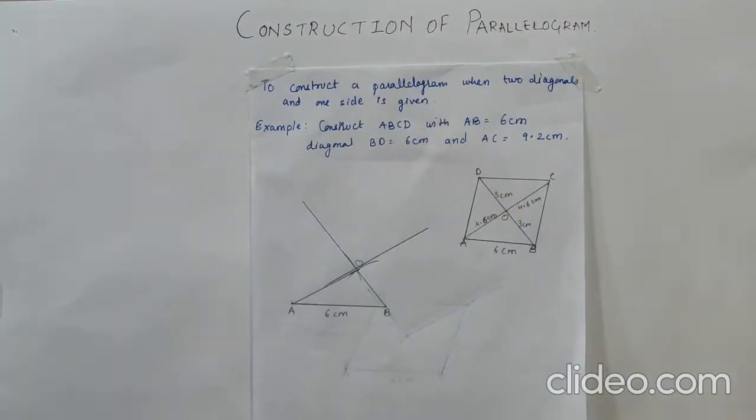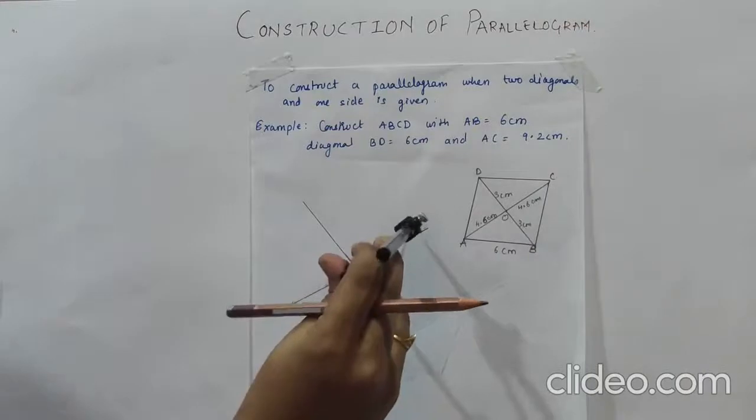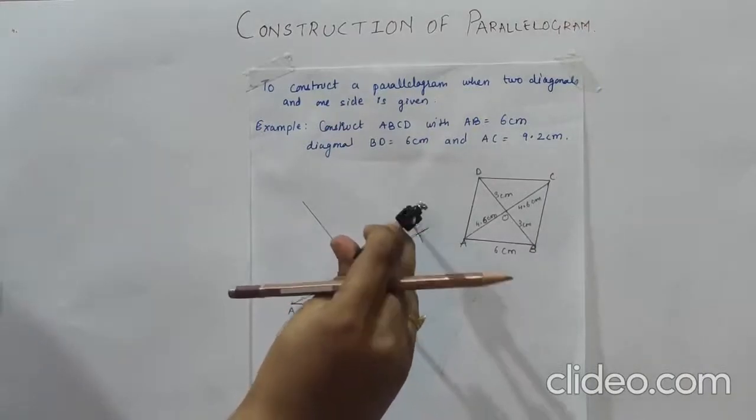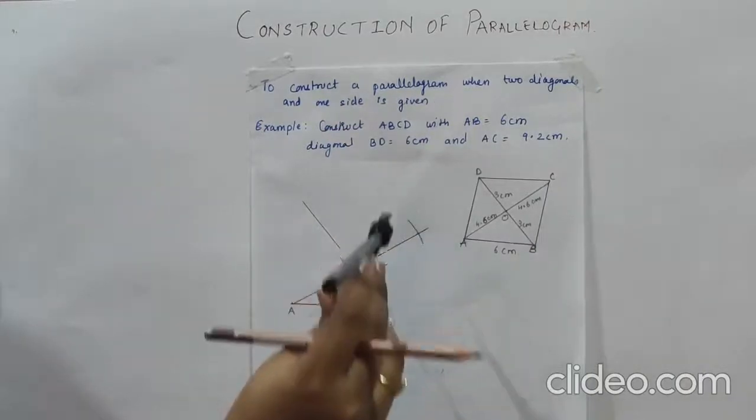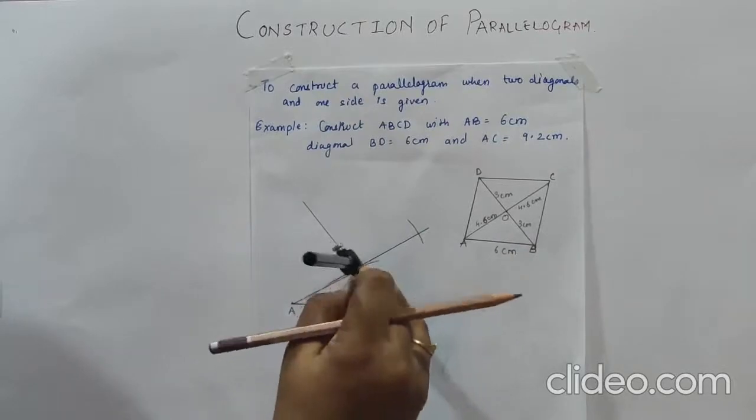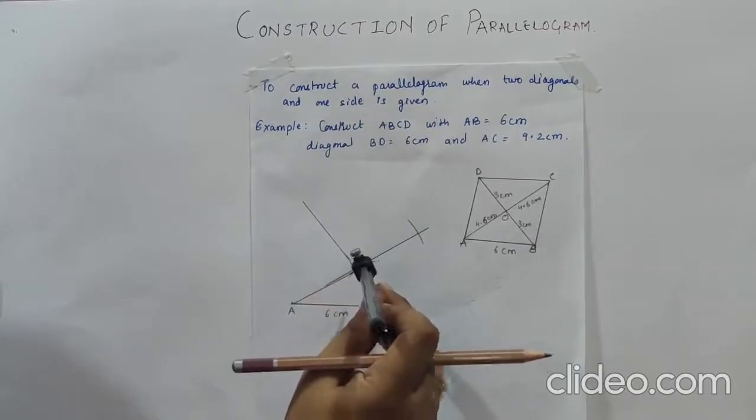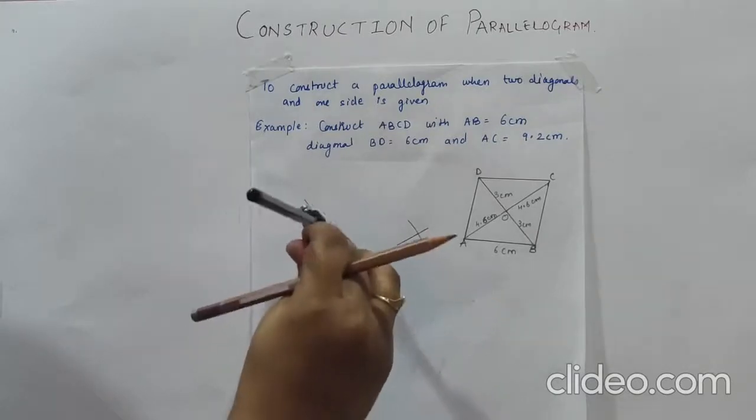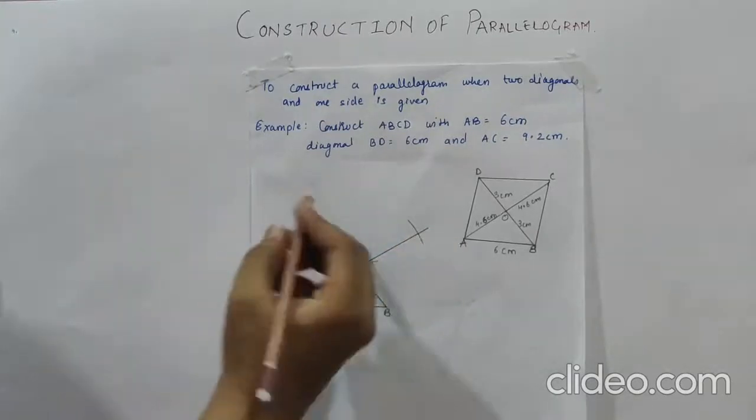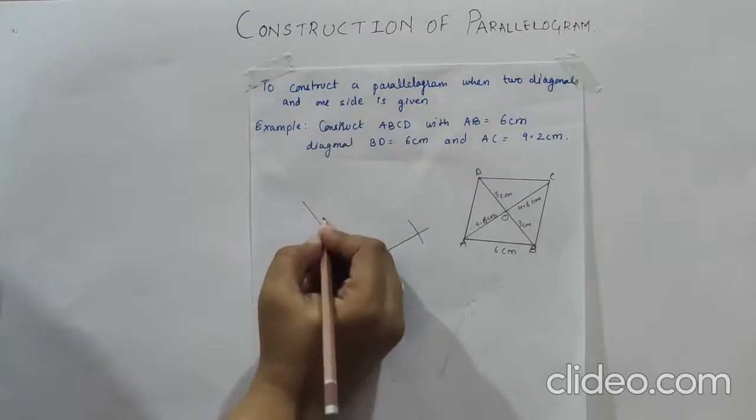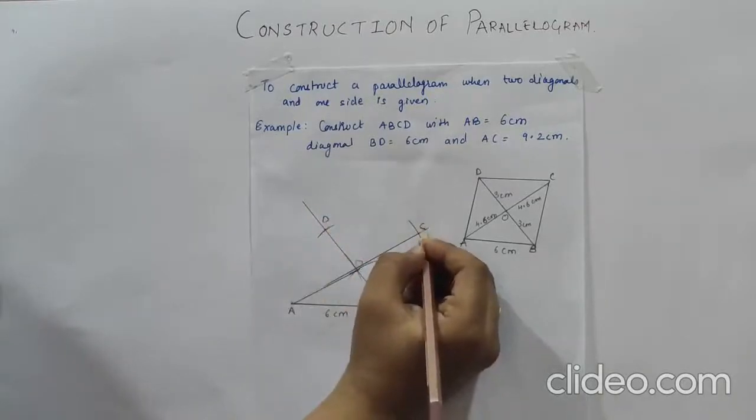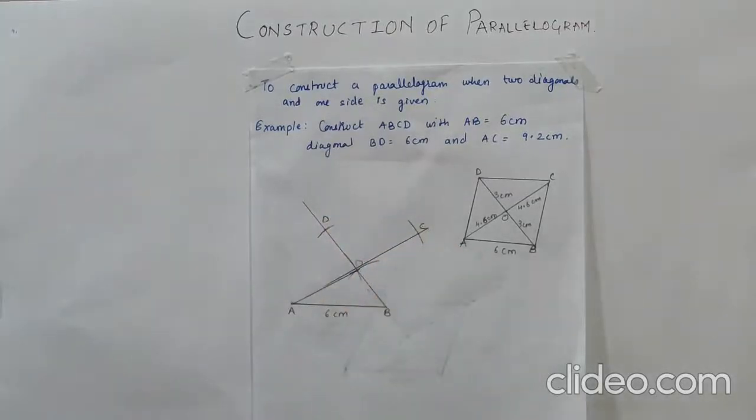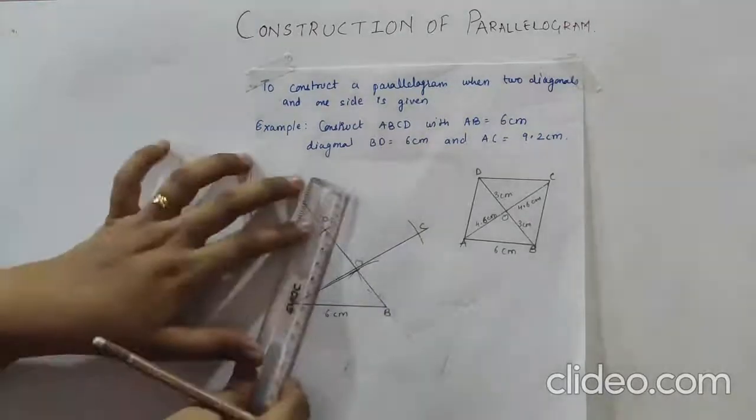So we have to cut. We have already measured 4.6. So keeping O as center now, we will cut the arc 4.6 over here. And with 3 cm we will cut it over here. So these are the other 2 vertices of the parallelogram.